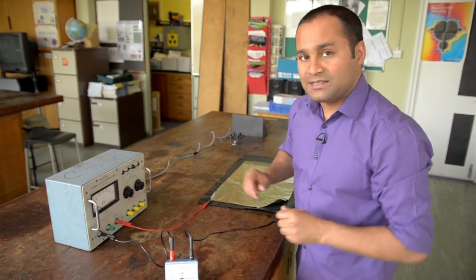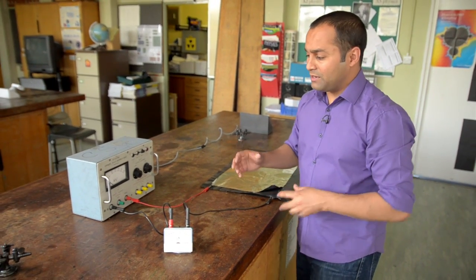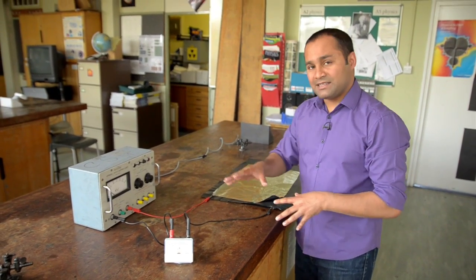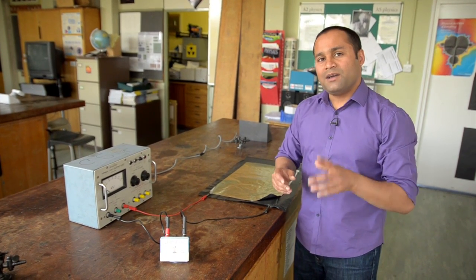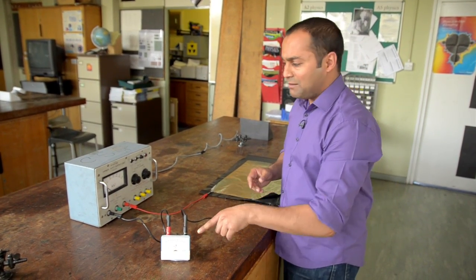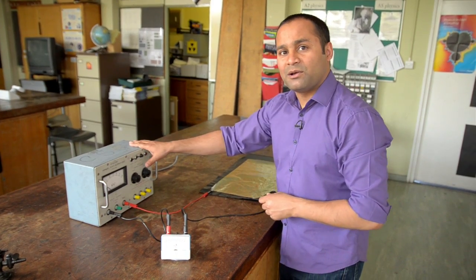So now it's ready to use in class. I usually begin by pointing out the various components and showing how it's connected, and asking my students if we've got a complete circuit. I then ask them to predict what they're going to see on the ammeter when I turn the power supply on.